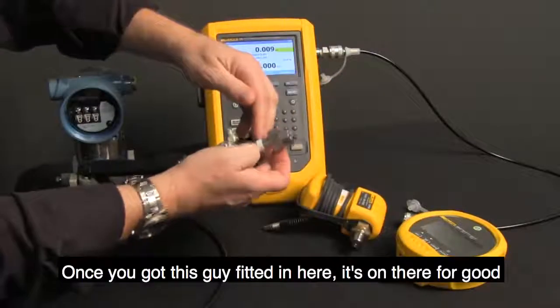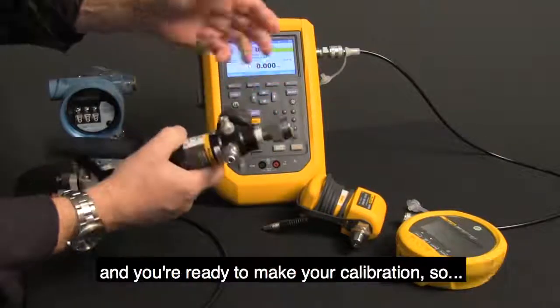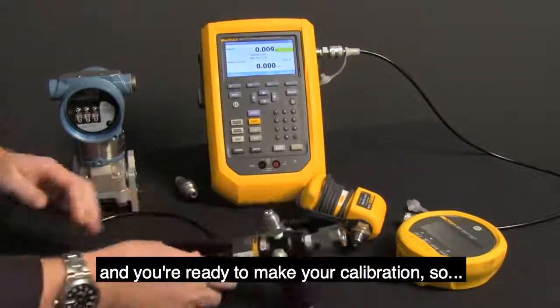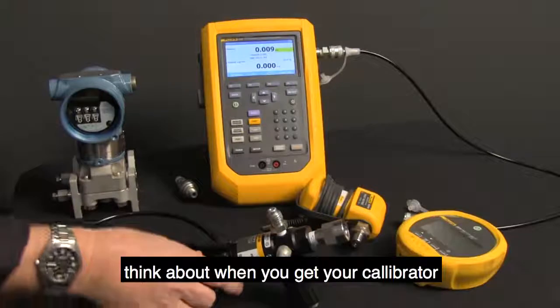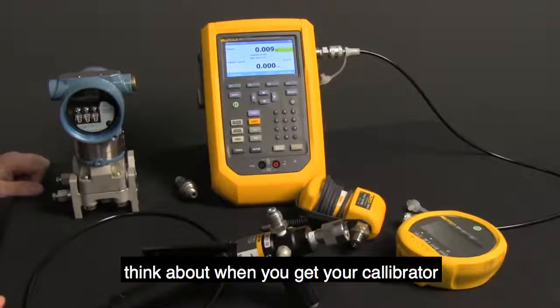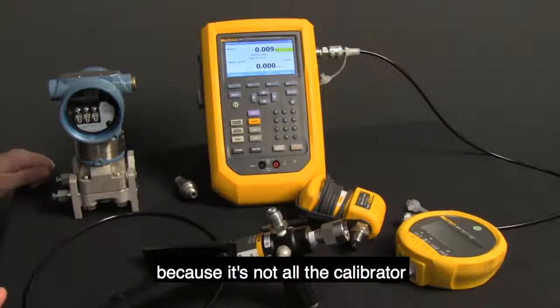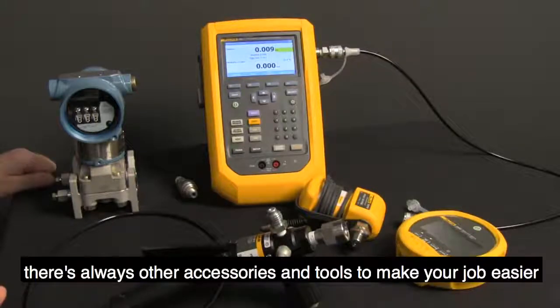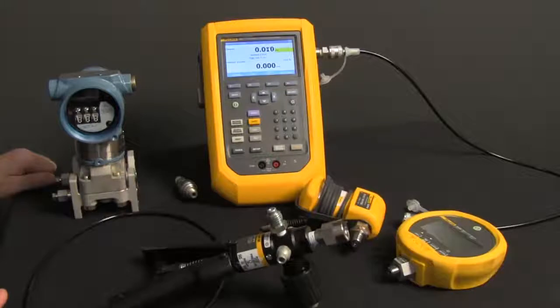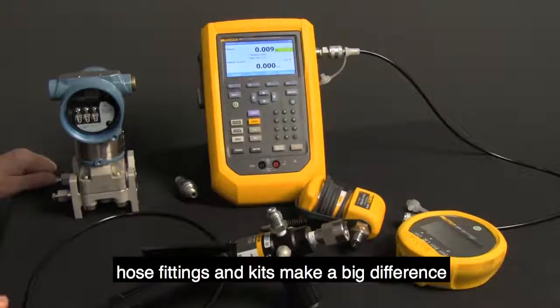Once you've got this fitted in here, it's on there for good and you're ready to make your calibration. So think about when you get your calibrator, what accessories are going to make the job easier? Because it's not all about the calibrator - there's always other accessories and tools to make your job easier. Hose fittings and kits make a big difference.